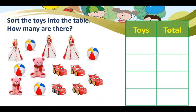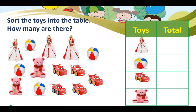Now, sort the toys into the table. How many are there? The table has the headings: toys and total. The toys are Barbie, ball, car toy, and teddy. How many Barbies? Yes, 3. Balls? That is 4. Car toys, there are 5. And the teddy is 2.